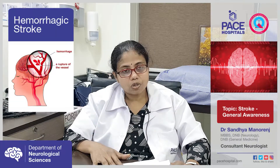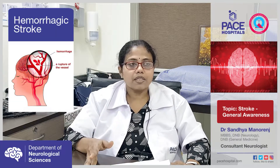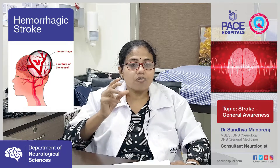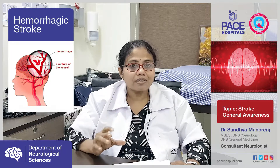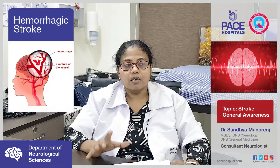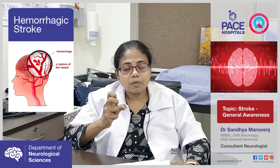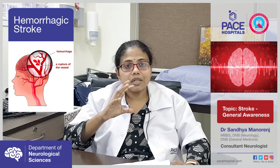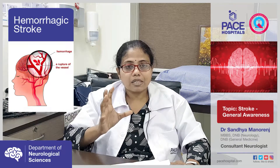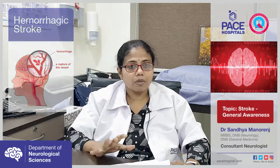In hemorrhagic stroke, due to high blood pressure, there is rupture of the blood vessels. The blood pressure becomes very high, causing rupture and bleeding, which results in decreased blood supply to important parts of the brain.